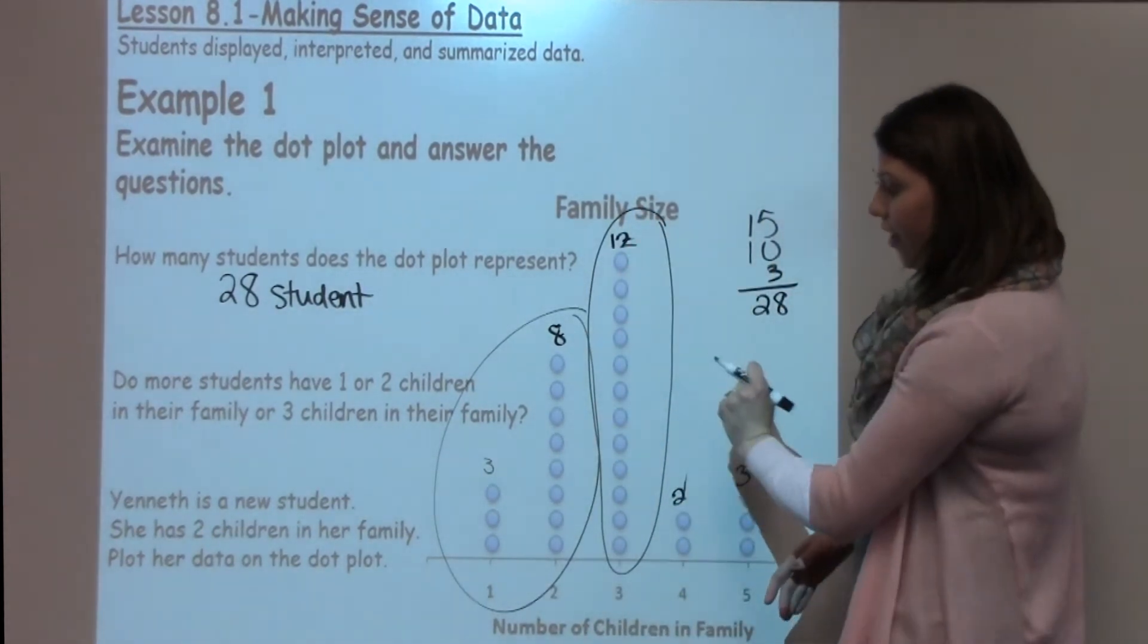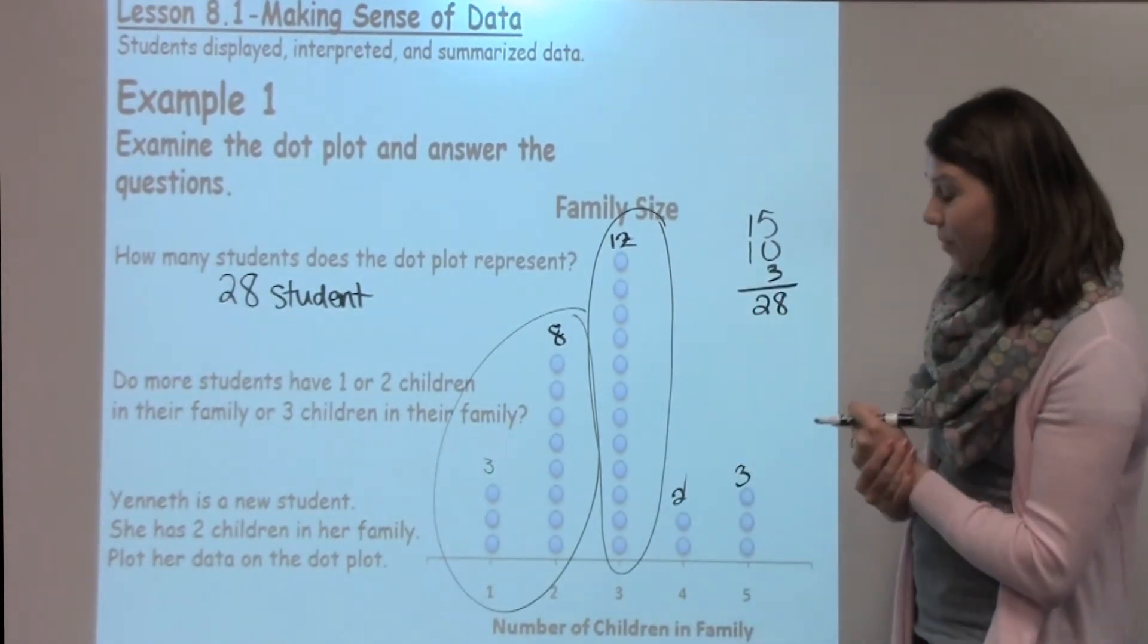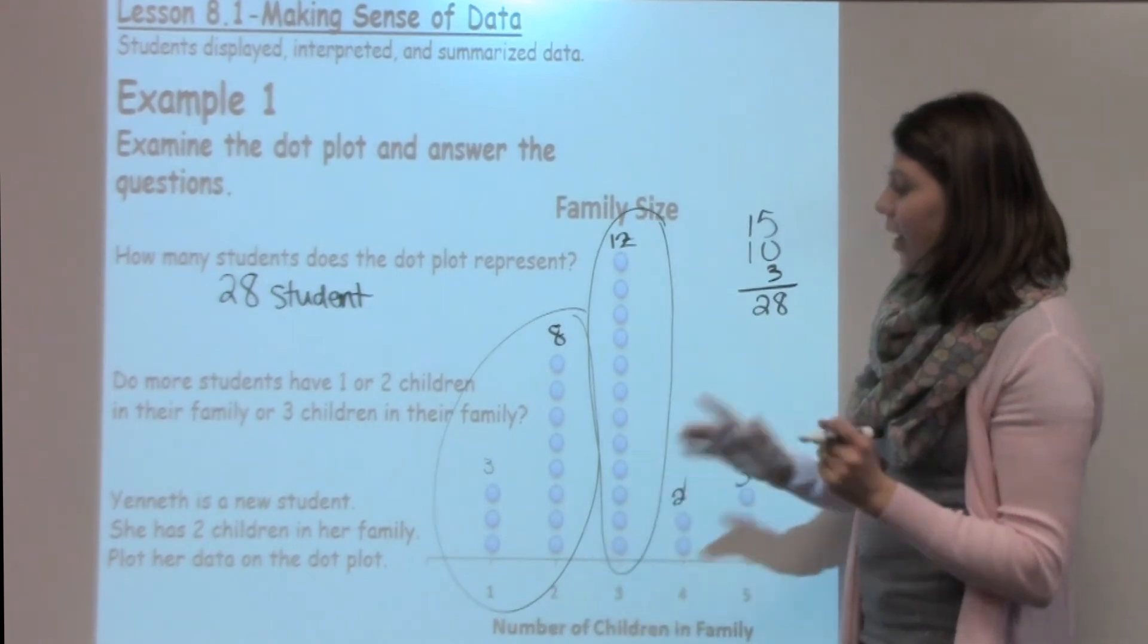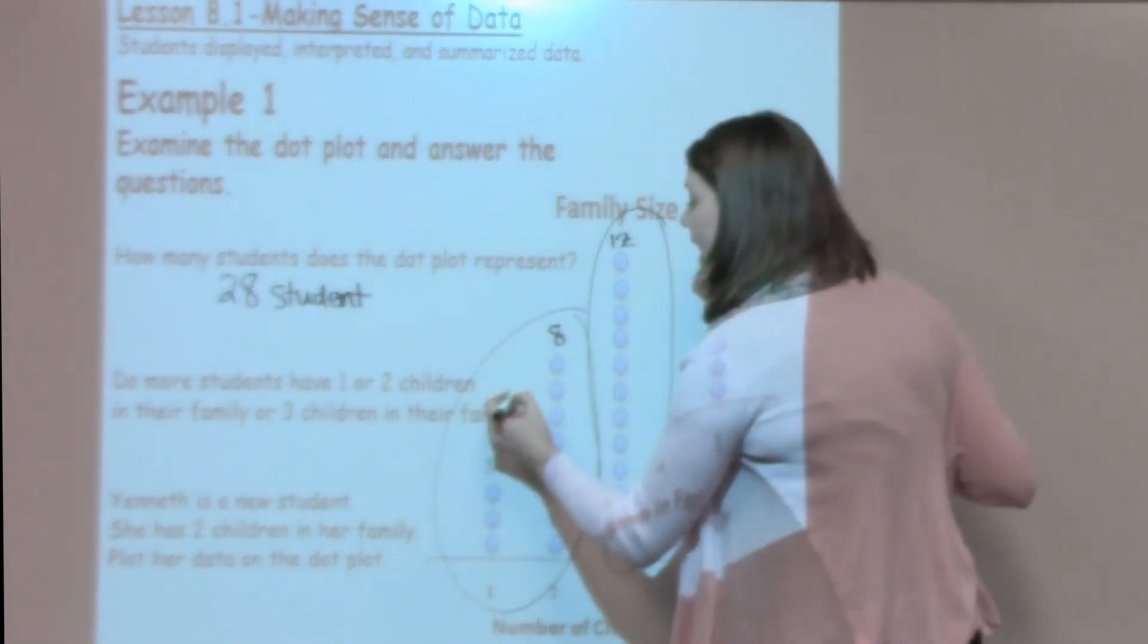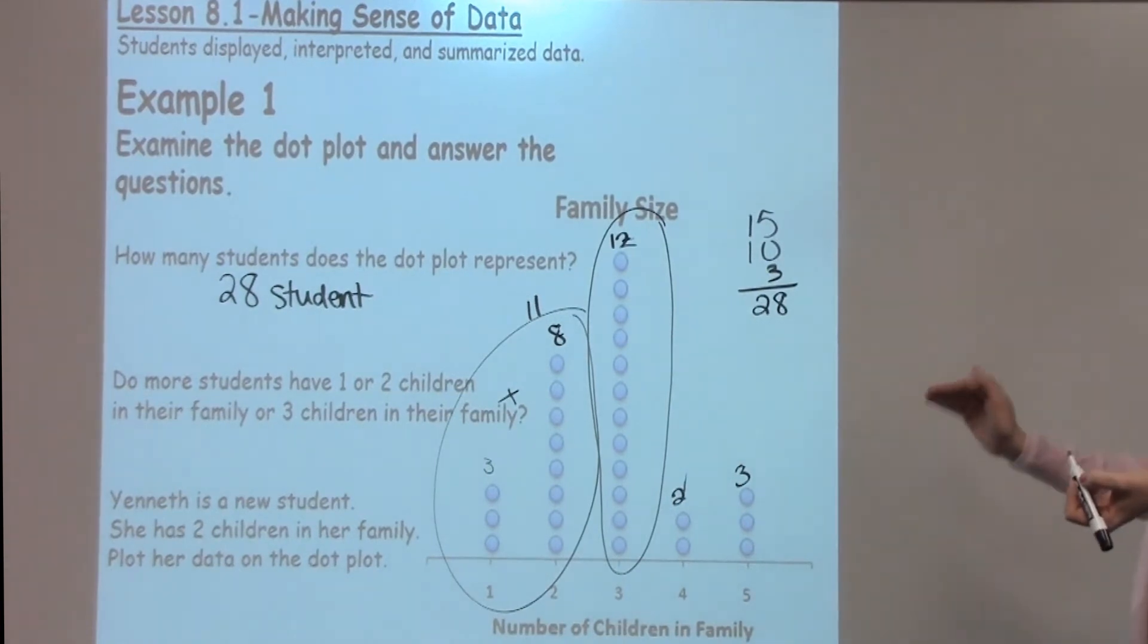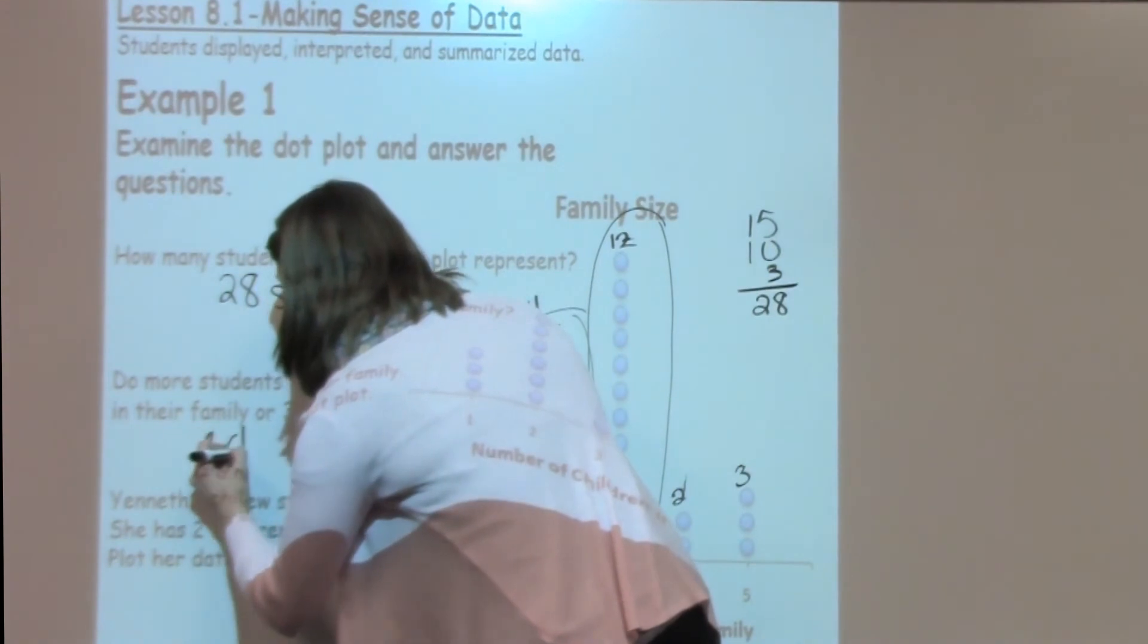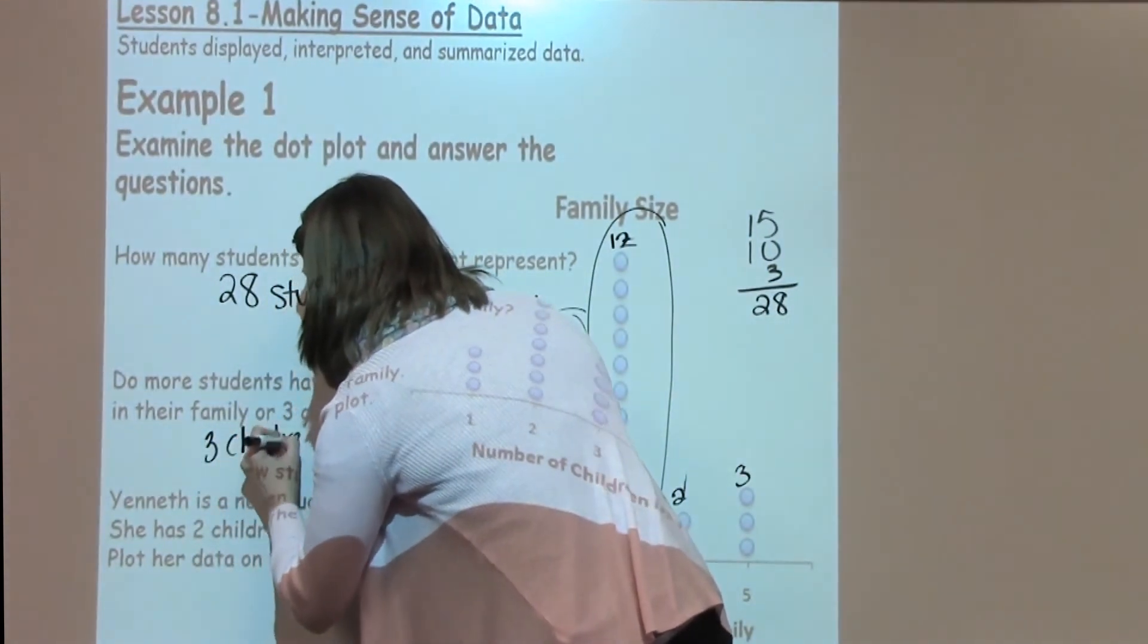Well I know three has twelve children, twelve is three, but I need to figure out what one and two, when I add those together, when I add those together I get eleven. So do more students have one or two children, or do more students have three? In this case the answer would be three children have more.